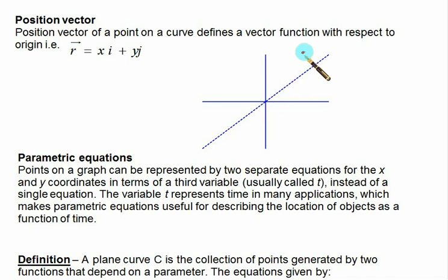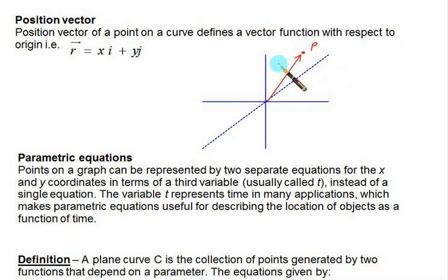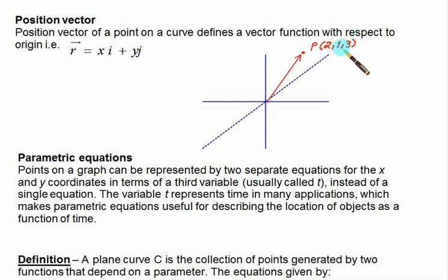In this video we are going to cover the gradient, curl, and divergence. For this we require certain definitions. The first definition is called the position vector. As the name indicates, it gives the position of any point with respect to the origin. For example, a point at (2, 1, 3) has position vector 2i + j + 3k — it gives the coordinates of a point with respect to the origin.